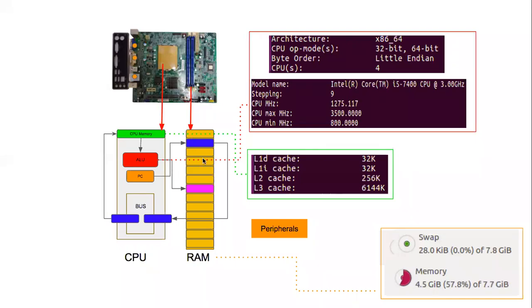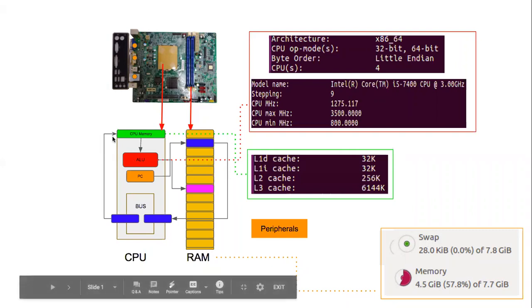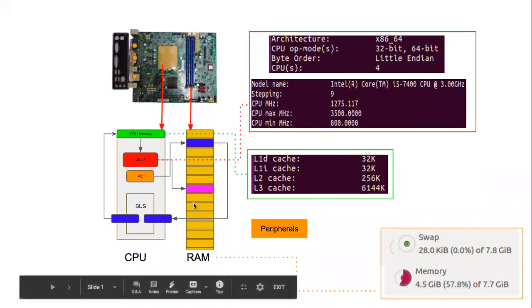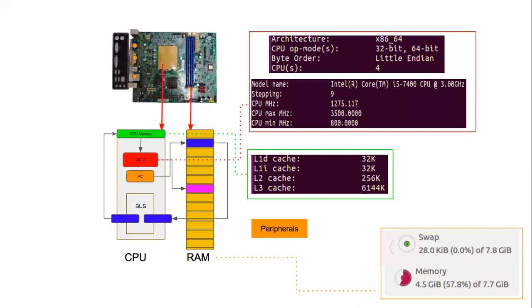Memory has many hierarchies. For example, you are at your home and you want a can of milk. If you have milk at home, that's the fastest access — that's like the CPU memory. But if there's no milk at home, you have to go to the nearby store — that's the RAM, which is outside your home. And if it's not even in the local store, you have to go to a different district — that's like a hard disk, where you have to go far to get the data.